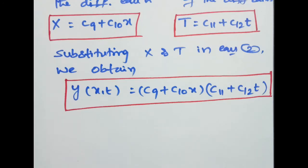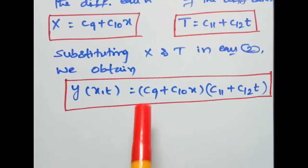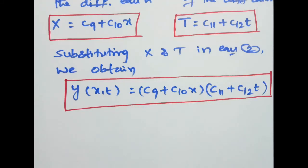Why is the solution in case 2 the suitable solution? Because the other two solutions arising in case 1 and case 3 will fail to give the values of the arbitrary constants when we apply the initial and boundary conditions. So the solution in case 2 is suitable — it gives the arbitrary values by applying the initial and boundary conditions.